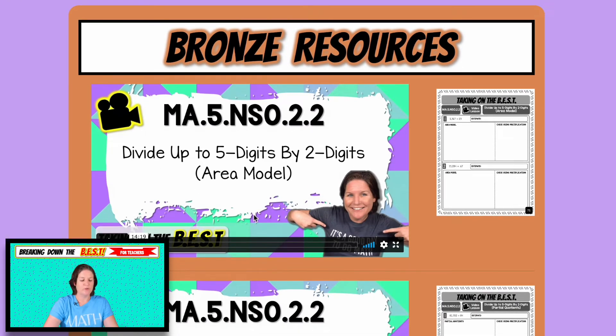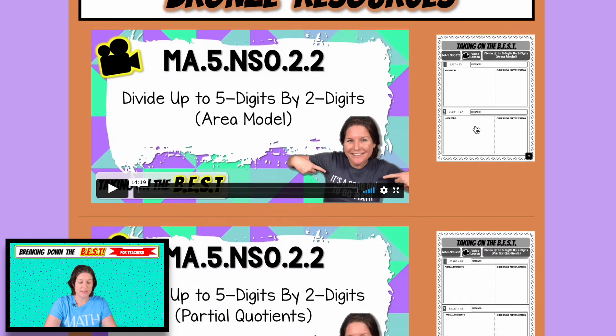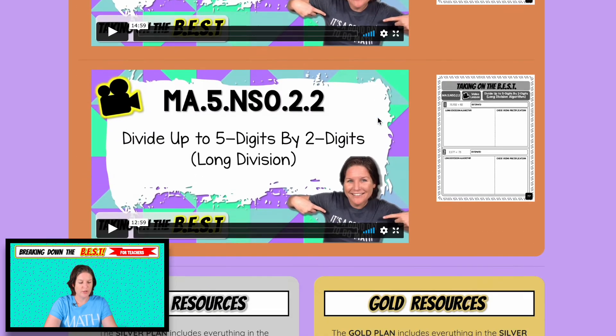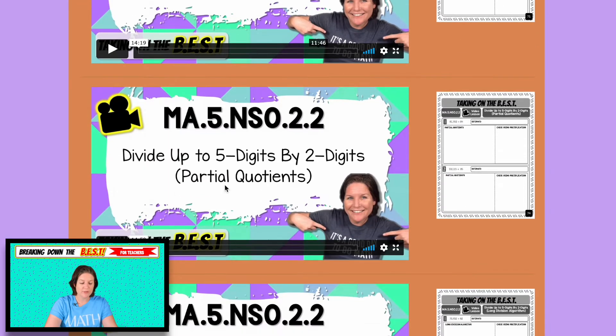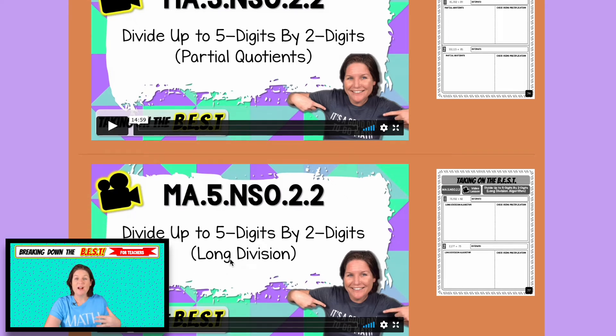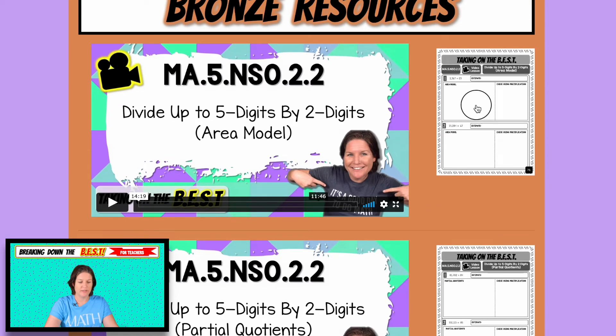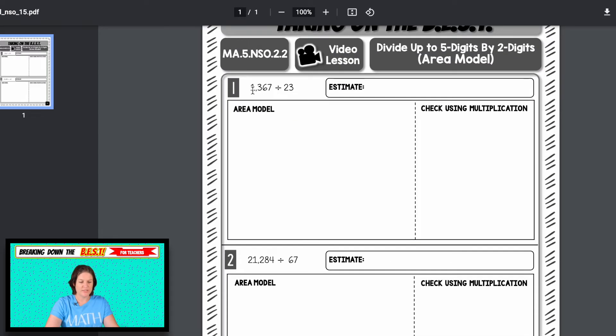And all of these resources are aligned to this standard. So divide whole numbers by up to two digits divisors. All right. These are your bronze resources, which include the video lessons and the printable student guides. So we have one, two, three video lessons, and you'll see the topic covered in the lessons on the cover right there. It says divide up to five digits by two digits using the area model. The next video, we're doing the same thing, but partial quotients method and then long division. So showing a variety of ways to solve these division problems.